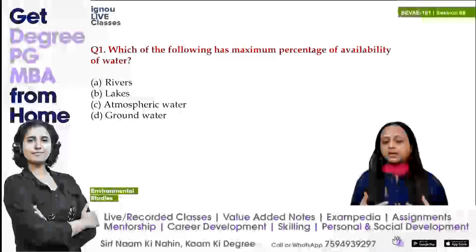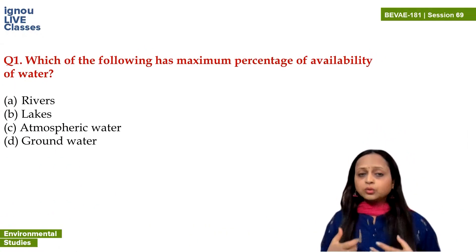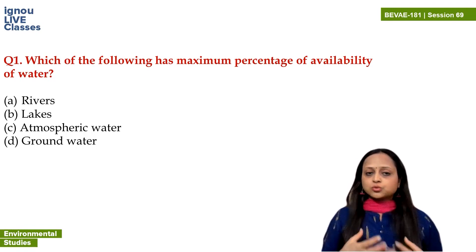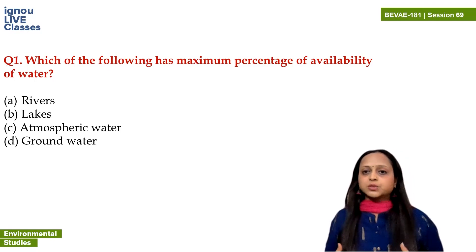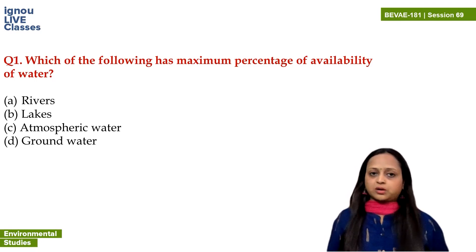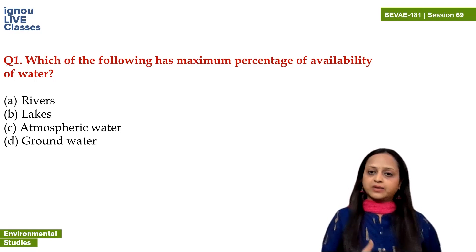Rivers and lakes are called surface water. Groundwater is underground water. The major portion of freshwater is available as glaciers or ice.